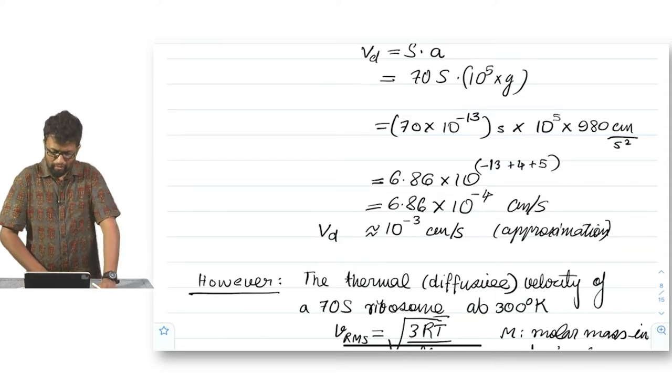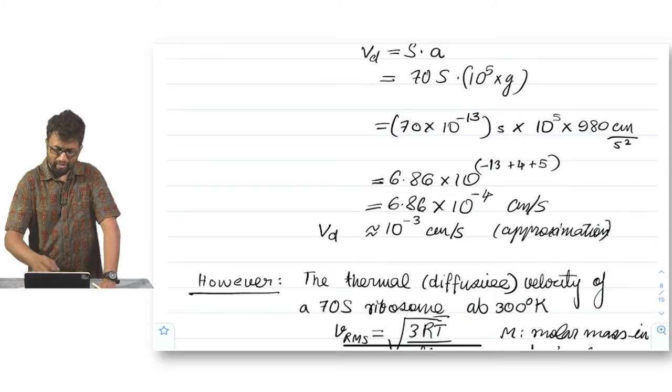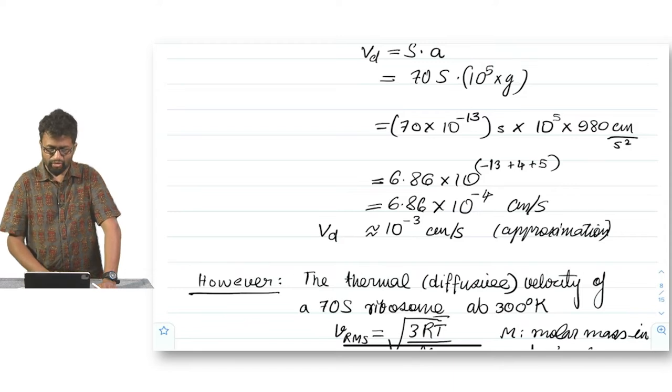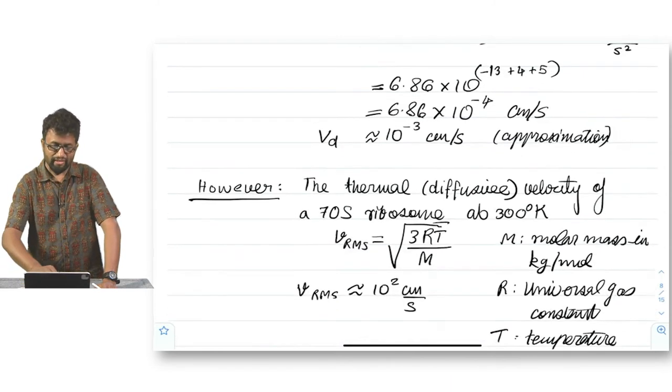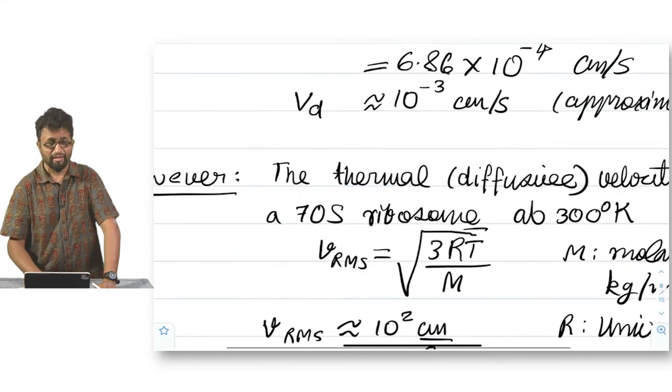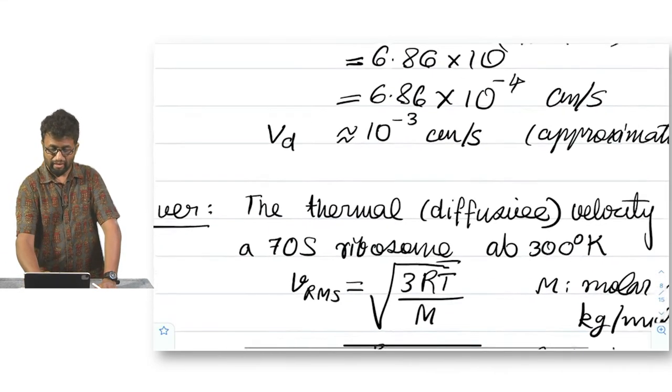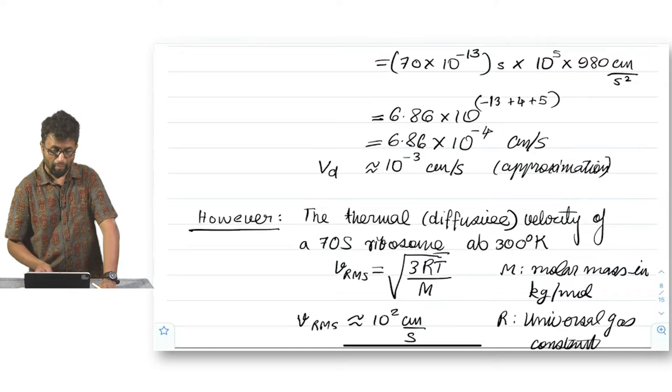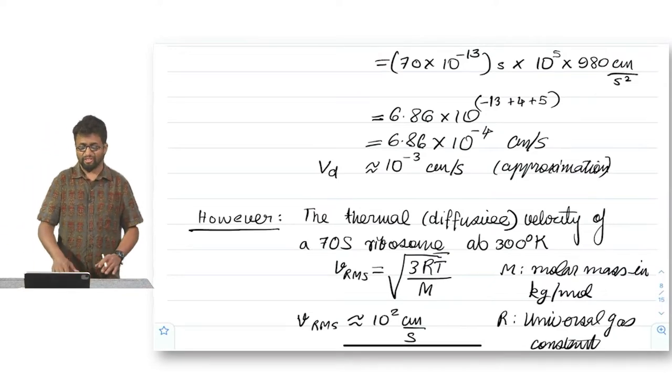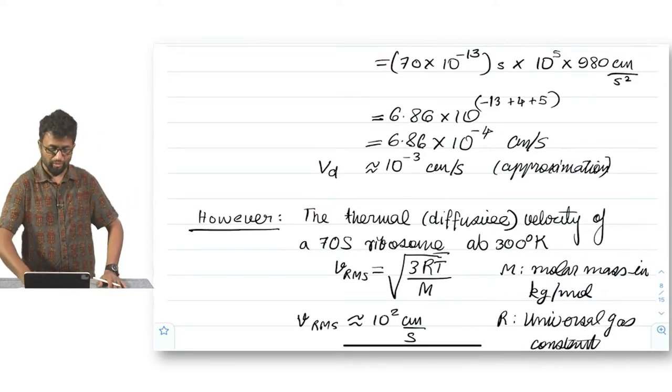When you are at that speed, even tiny imbalances can cause catastrophic damage, right. Because this is partly why what we call balancing the tubes is critical in ultracentrifugation. If you thought that running it at 5000 G was bad enough, think about it that you are going at 1 lakh, ok. So, in this case, we substitute the numbers VD is equal to 70S into 10 to the power 5G. And we get an answer which is that VD is equal to 10 to the power minus 3 centimeters per second, which is approximated from the exact answer which is 6.86 into 10 to the power minus 4 centimeters per second.